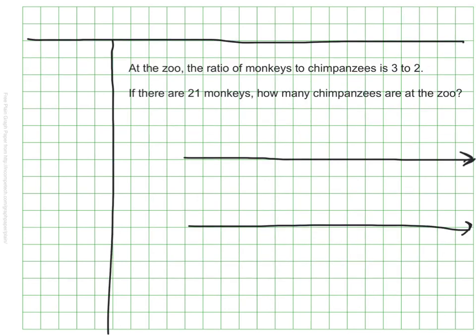So here's our situation. At the zoo, the ratio of monkeys to chimpanzees is 3 to 2. If there are 21 monkeys, how many chimpanzees are at the zoo?